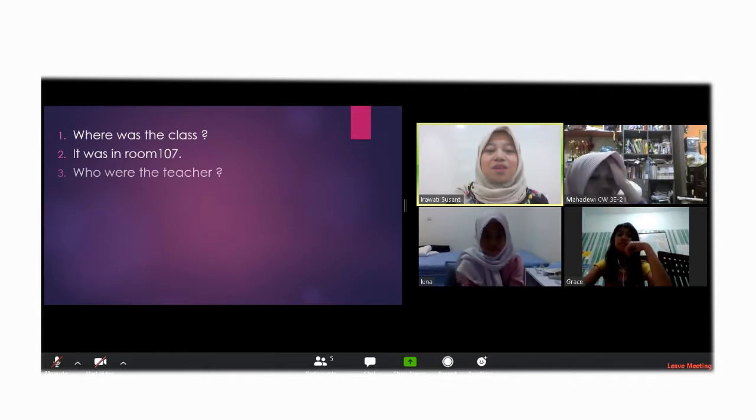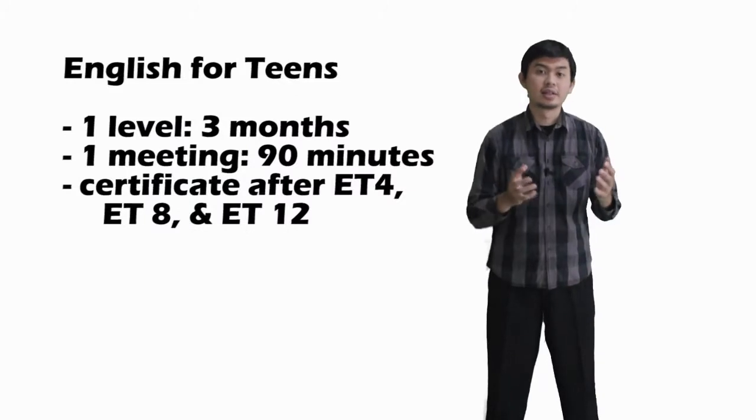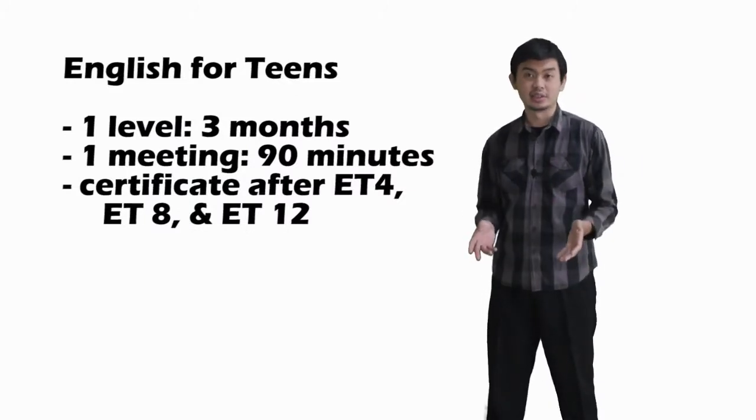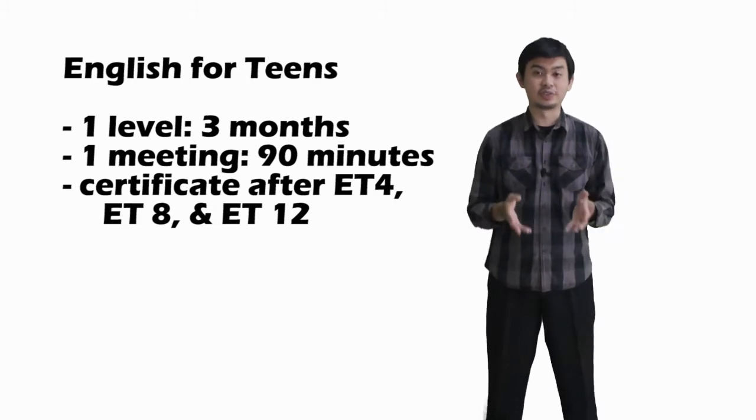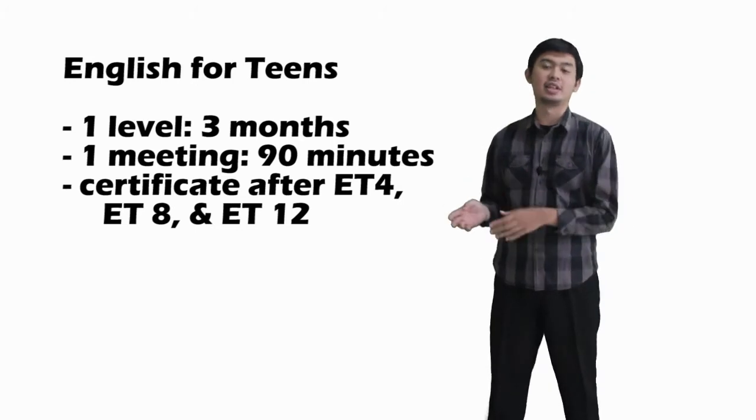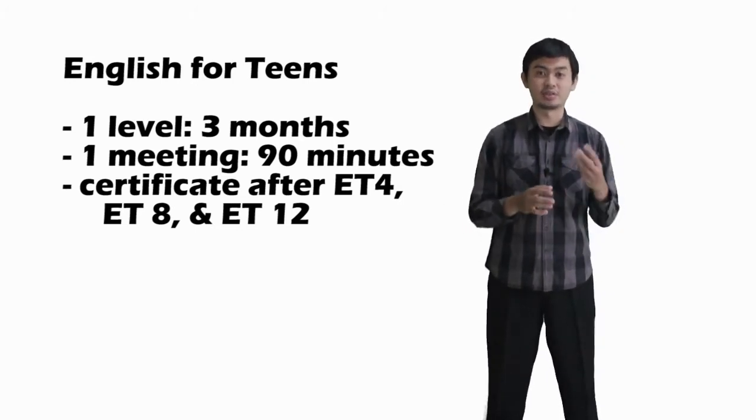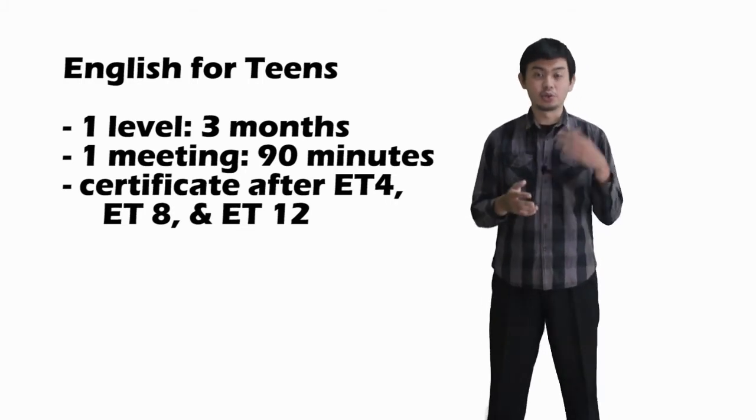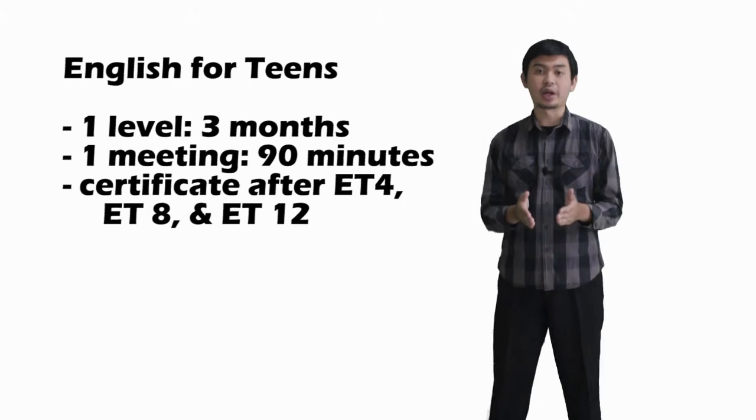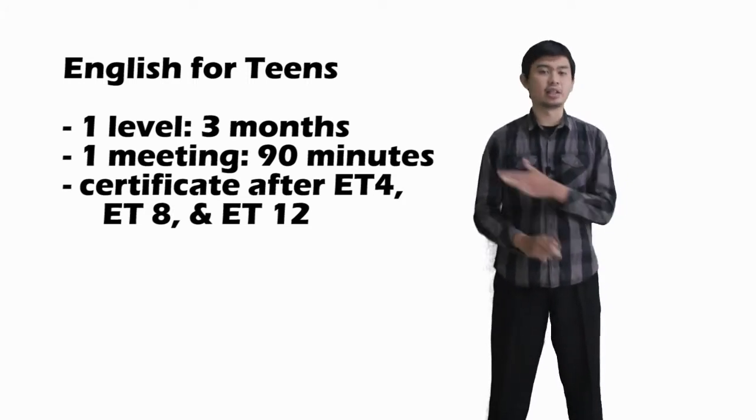You can have your certificate after finishing level 3B and 6B. The second program is ET Program, English for teens. This program is for junior high school students. We have from ET1 until ET12. One level is completed within 3 months period. The duration of each meeting is 90 minutes. And you can have your certificate after completing ET4, ET8, and ET12.